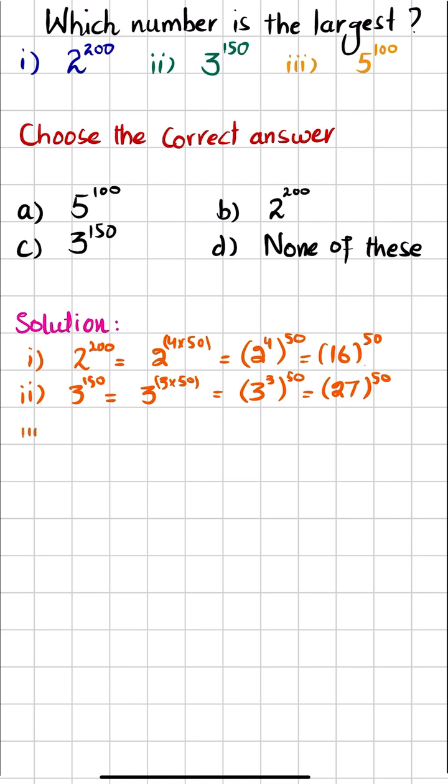Similarly, we will take the third one, and the third one is 5 power 100. If we divide this, 100 can be written in terms of a multiple of 50 as 2 multiply by 50, which is equal to 5 power 2 multiply by 50. And 5 power 2 is equal to 25, so 25 power 50.